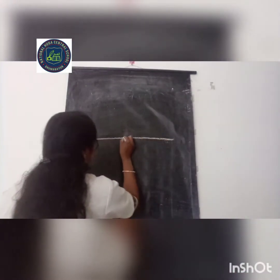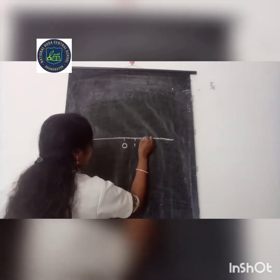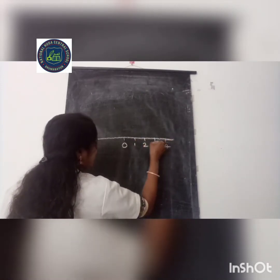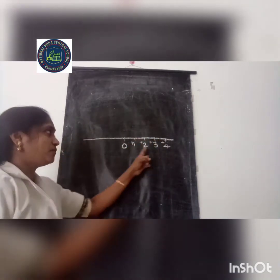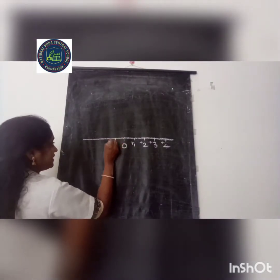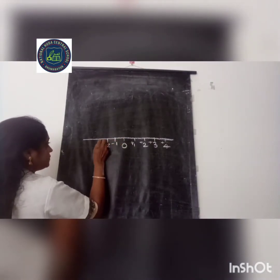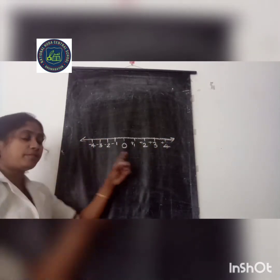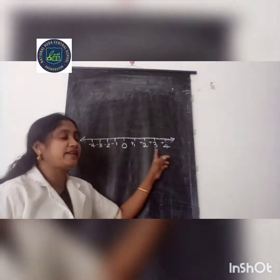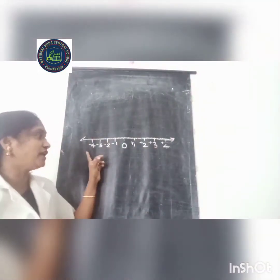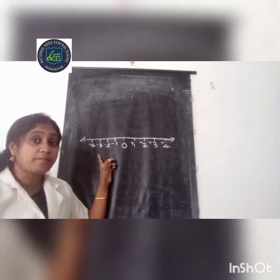We can draw a number line. These are positive numbers: positive 1, positive 2, positive 3 and positive 4. And here there are negative 1, negative 2, negative 3, negative 4. So this is a number line. If we move to the right hand side, the numbers are increasing. And if we move to the left hand side, the numbers are decreasing.